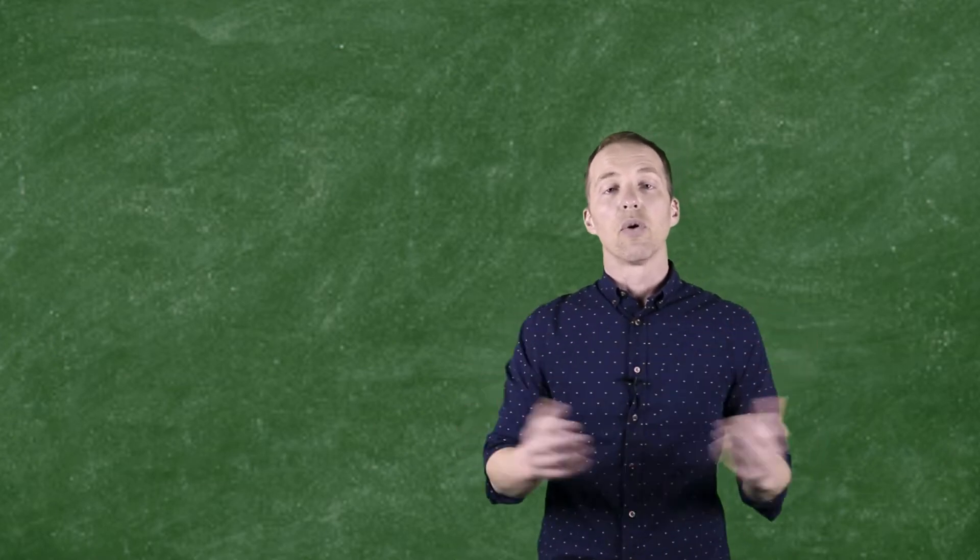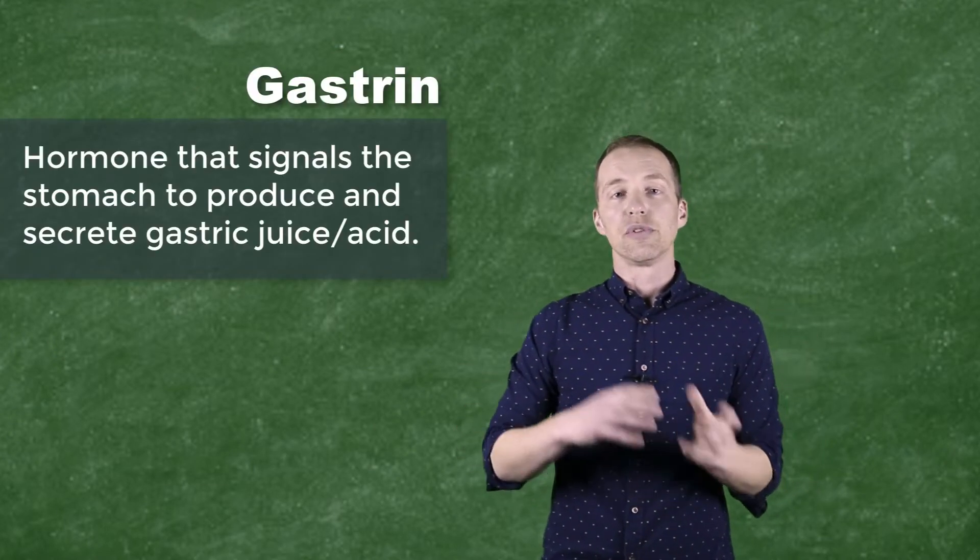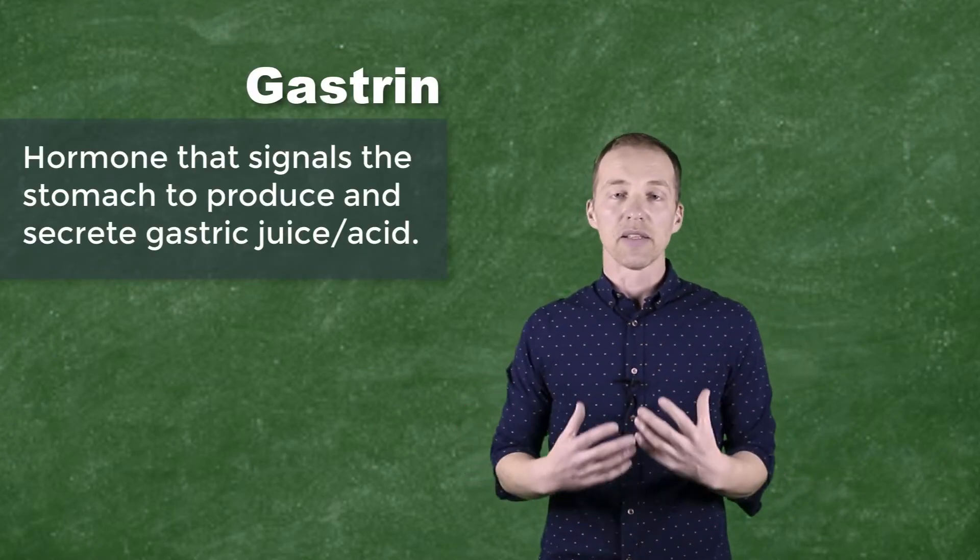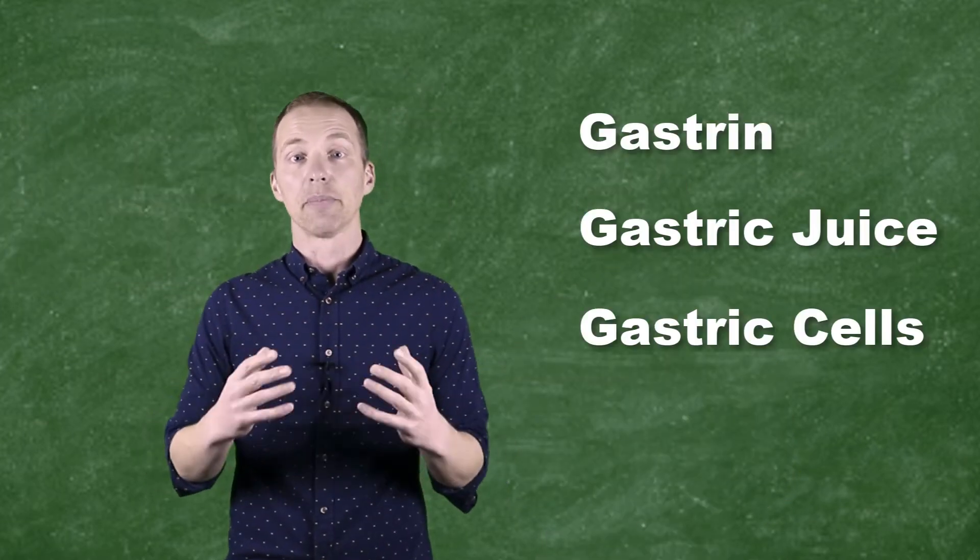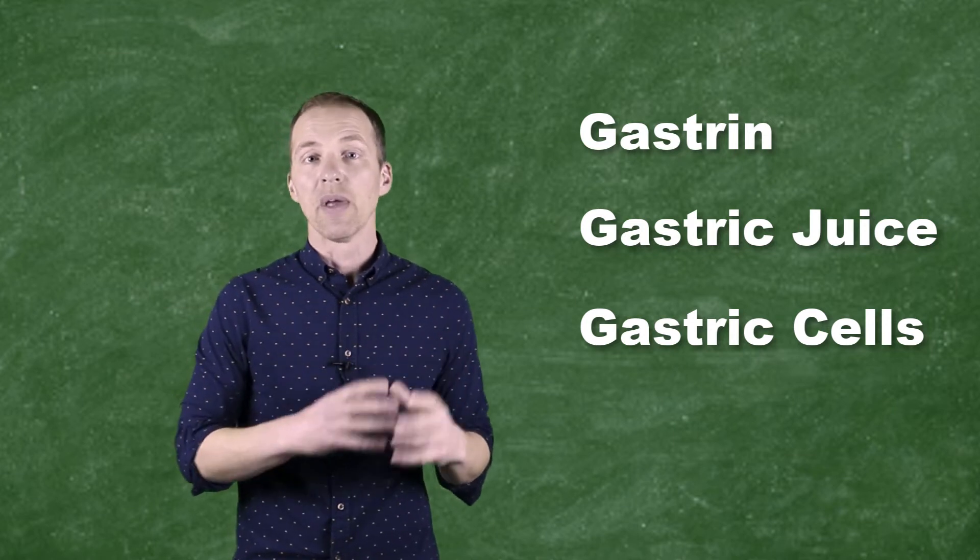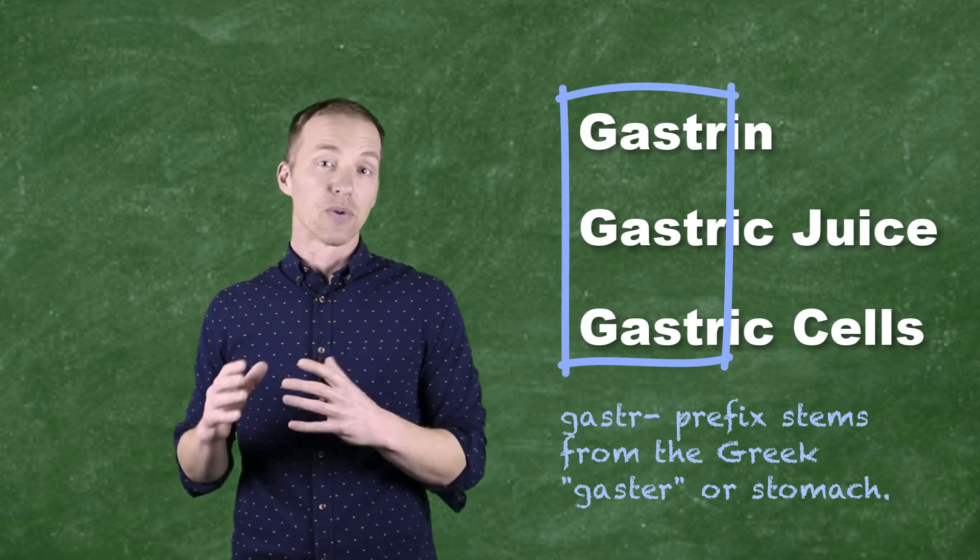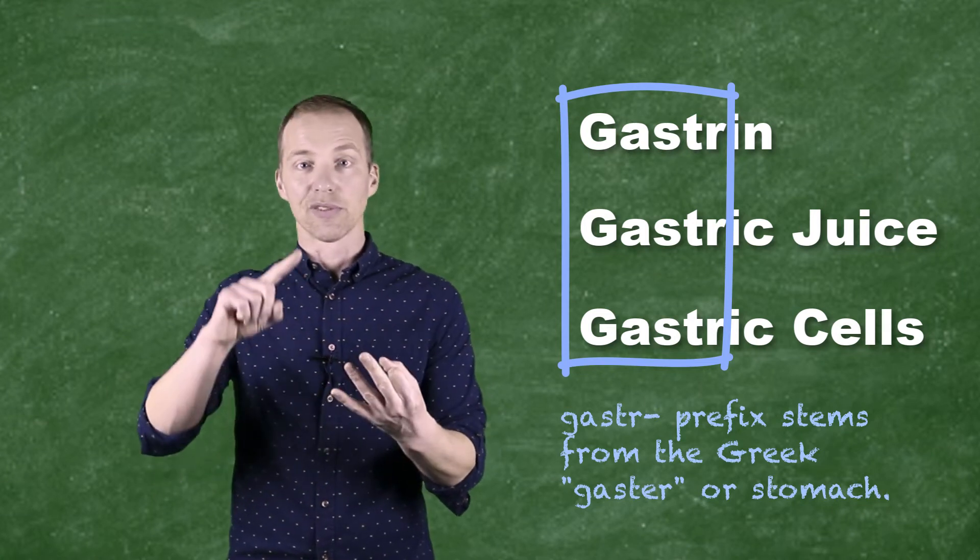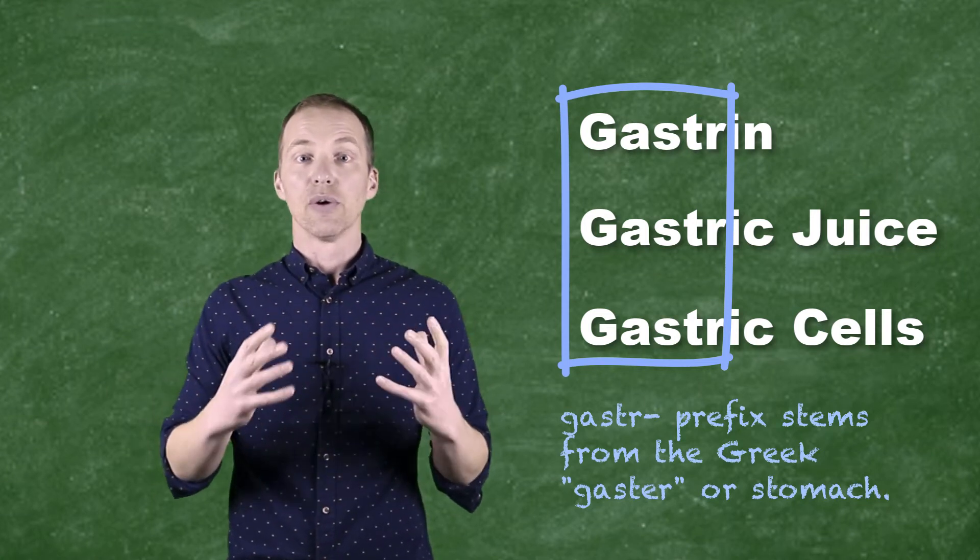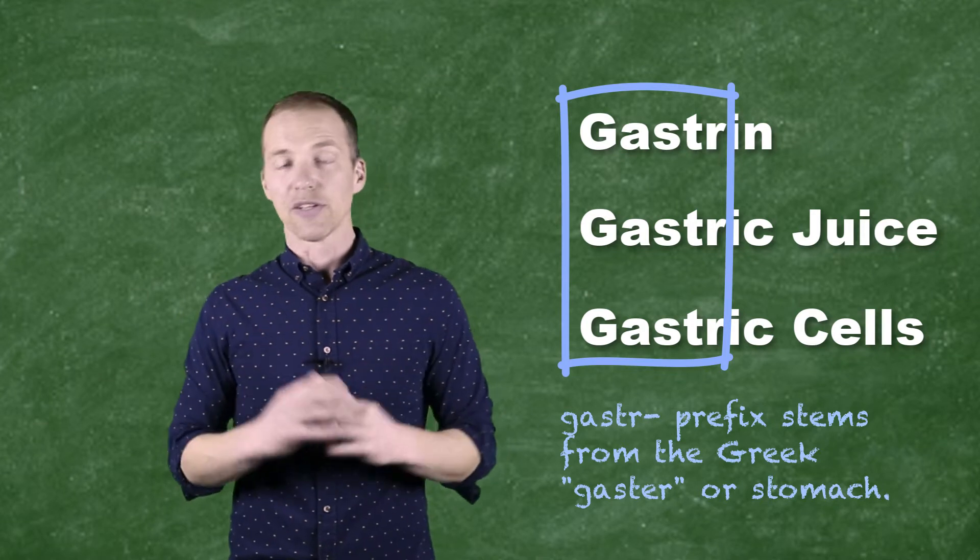So in our case, the hormone gastrin is used to signal the gastric cells lining the stomach to produce gastric juice. Now all these gast or gastro prefix actually gives us a little bit of information about this stuff as well. The gastro prefix stems from the Greek for stomach. So anytime we hear gastrin or gastric juices or gastric cells, it's referring to those things that occur in and around or related to the stomach.